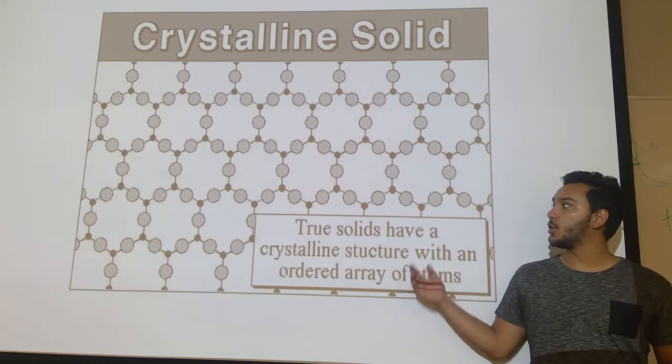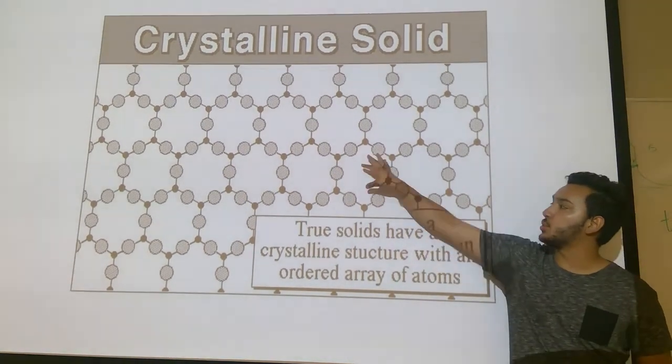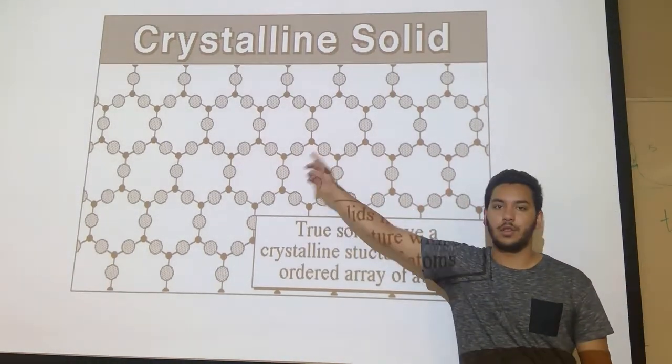There is also a regular array of the atoms within the crystal. This is why it's called a unit cell, because as you can see they repeat themselves over and over and over again.